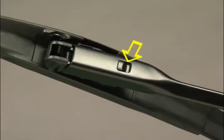The button on the top of the adapter must lock into the hole in the top of the arm. Before use, make sure the wiper blade and adapter are locked onto the wiper arm.